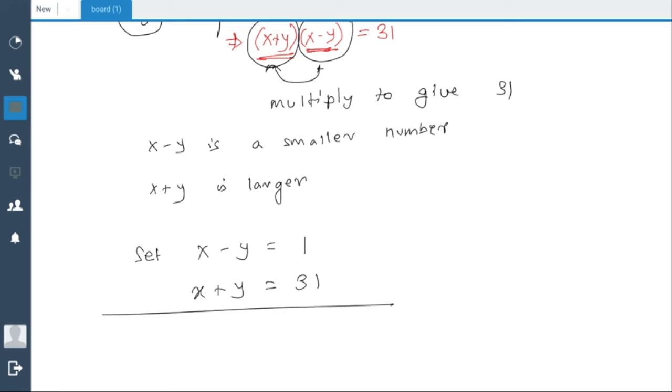So if you add these two equations, you will have 2x = 31 + 1 = 32, because the negative y and positive y will cancel each other. So 2x = 32, or x = 16.